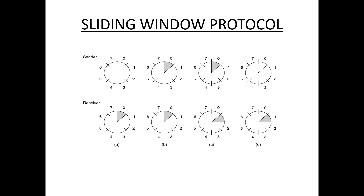That means the sender transmits one frame and the receiver transmits one frame. The sender transmits a frame with a sequence number and waits for acknowledgement from the receiver. The receiver sends back an acknowledgement with that sequence number.